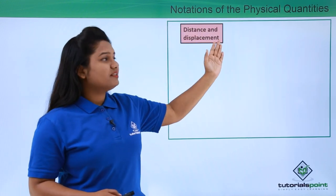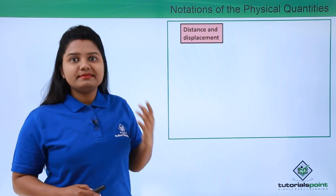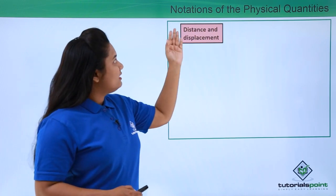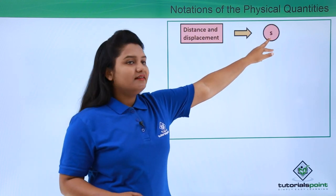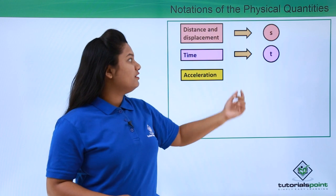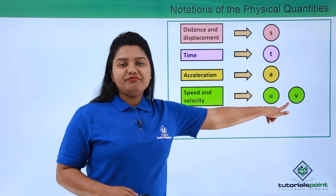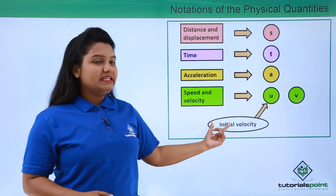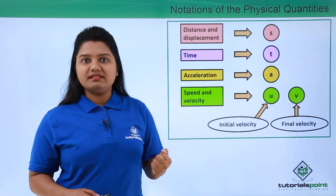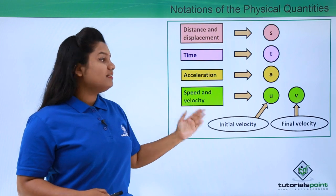Let us learn some notations that we will be using in these equations of motion. We will be denoting these physical quantities by some symbols that we need to bear in mind. Distance or displacement is given by the letter s, time is given by the letter t, acceleration is denoted as small a, and speed or velocity is denoted by u or v. Here u denotes the initial velocity of the body and v denotes the final velocity of the body. All these symbols will be used when we denote physical quantities in the equations of motion.